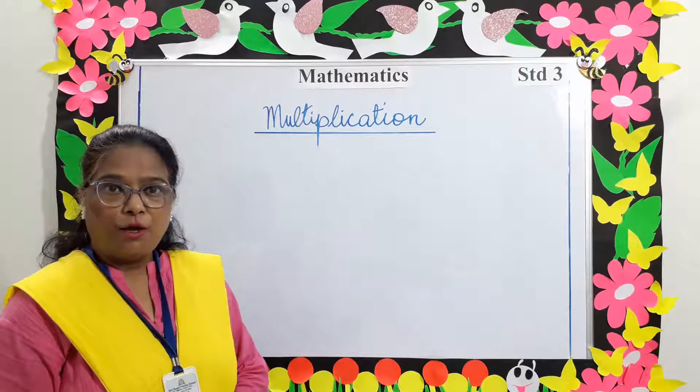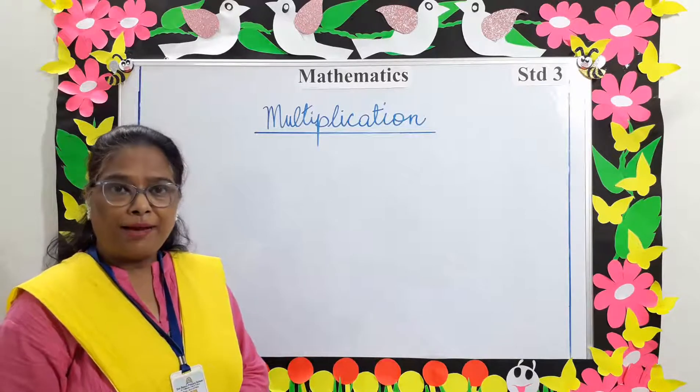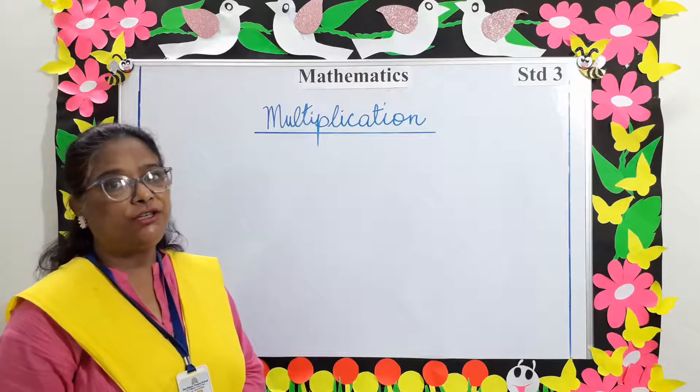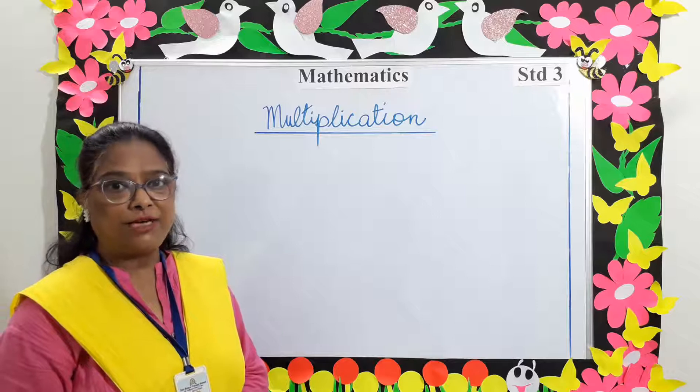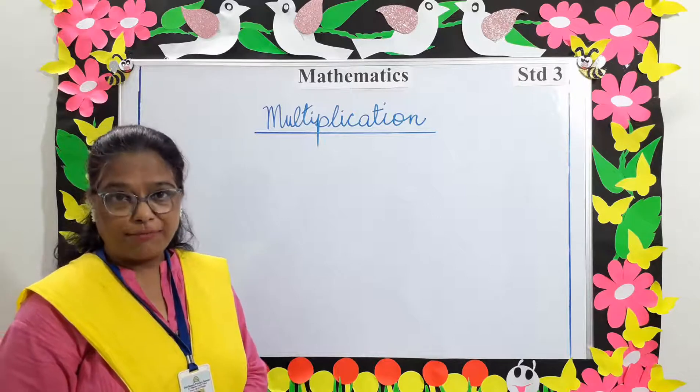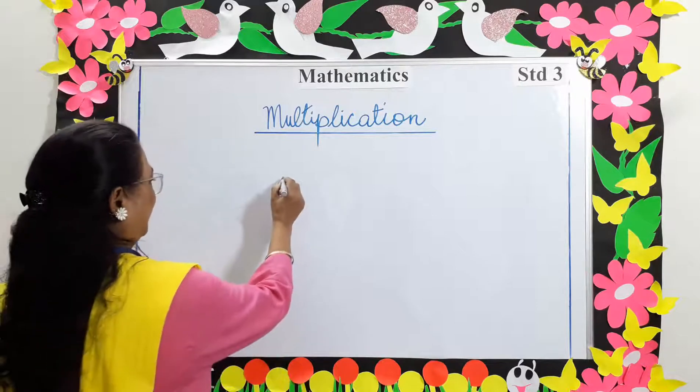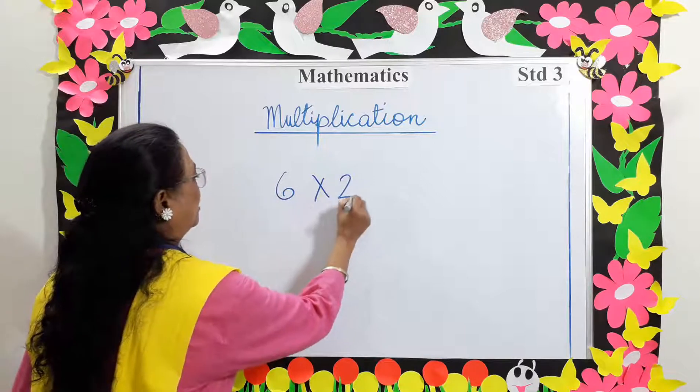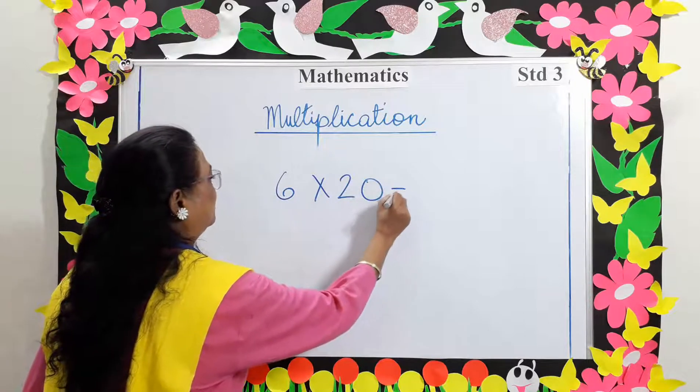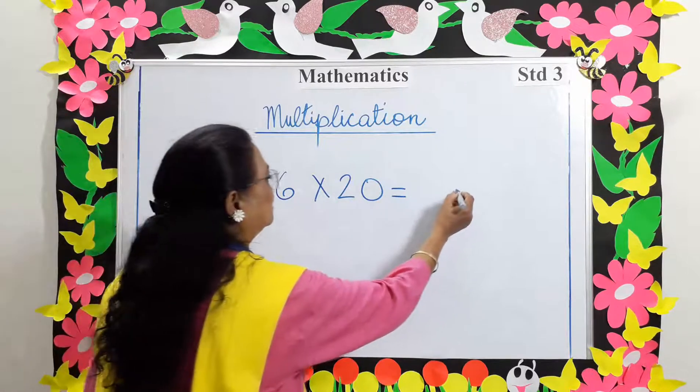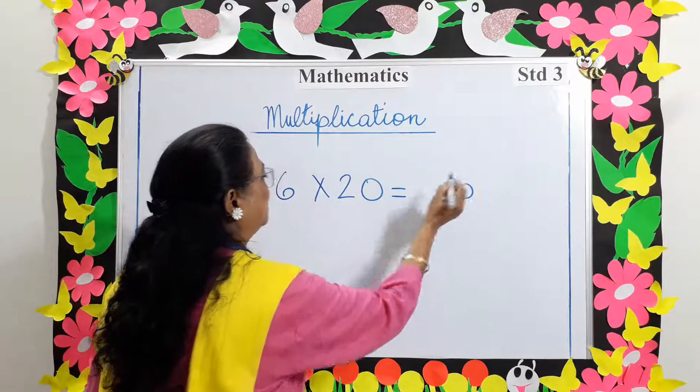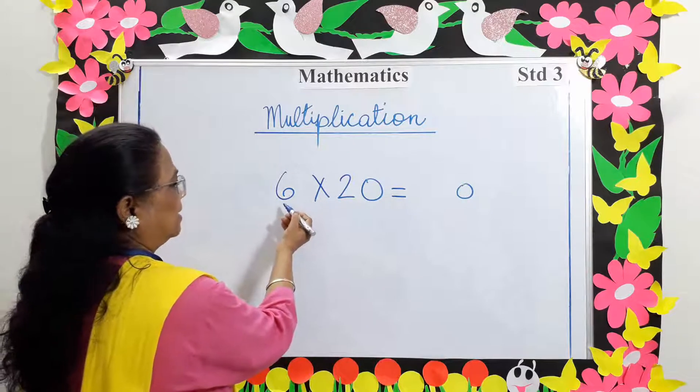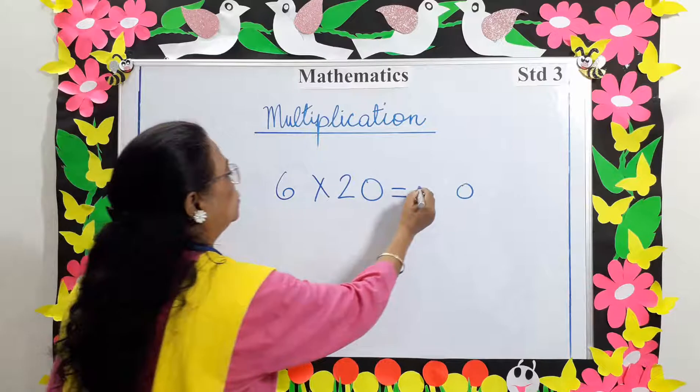Next, when multiplying any number by 10s or 100s, always put the 0 at the end and multiply the rest of the number. 6 multiplied by 10. 6 multiplied by 20: put the 0 at the end and multiply 2 by 6. 6 twos are 12.